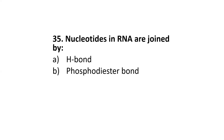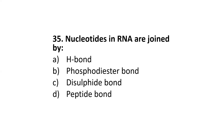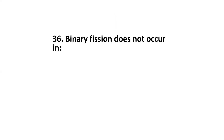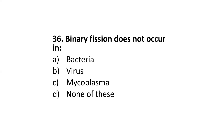Next: nucleotides in RNA are joined by — hydrogen bonding, phosphodiester bonding, disulfide bonds, or peptide bonds? The correct option is B: phosphodiester bond. Next: binary fission does not occur in — bacteria, viruses, mycoplasma, or none of these? The correct option is B: virus.